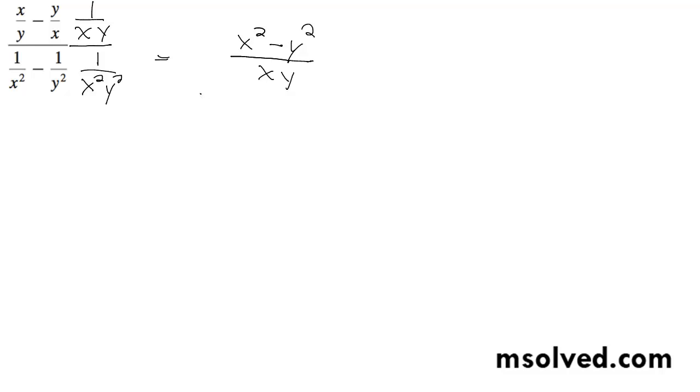And on the bottom, we get y squared minus x squared over x squared y squared.